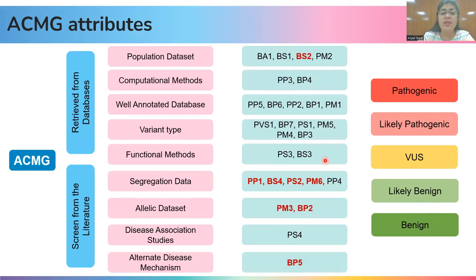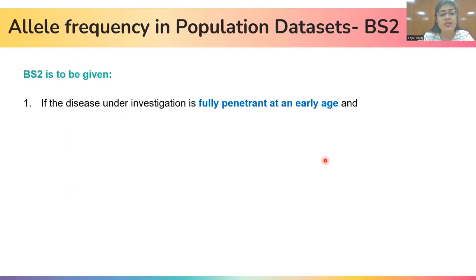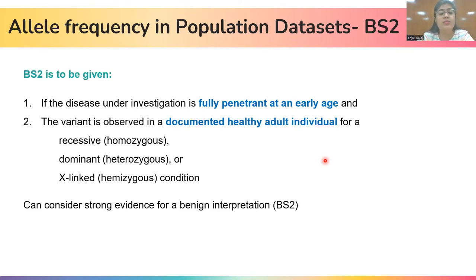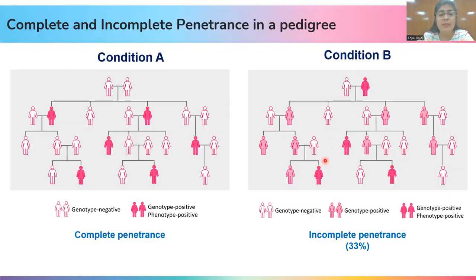Having understood the concept of reduced penetrance in autosomal dominant disorders, let us revisit a few of the ACMG-AMP attributes. The first attribute is BS2. It is strong evidence for the benign interpretation of a variant and is given when a variant is observed in a healthy adult individual. However, it is to be given only when the disease is fully penetrant at an early age and the variant is observed in a healthy adult individual. For example, one can consider giving BS2 for a condition where the penetrance is 100%.